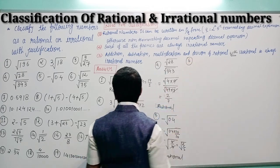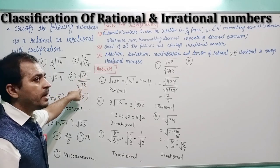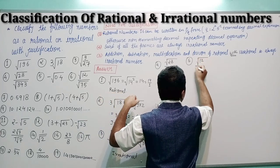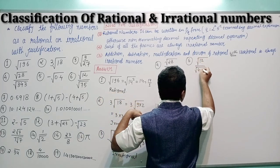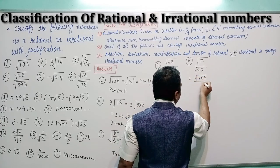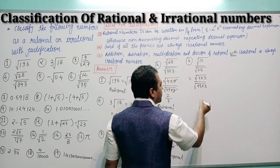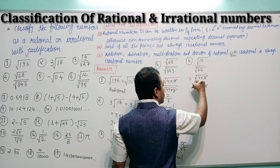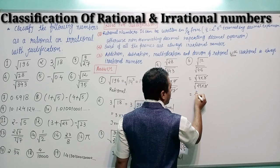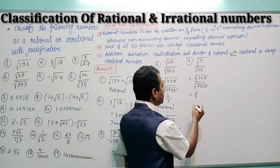Question number 6: √12 / √75. √12 can be written as √(4×3) and √75 as √(25×3). The √3 terms cancel, giving √4/√25 = 2/5. Since it can be written in p/q form, it is a rational number.